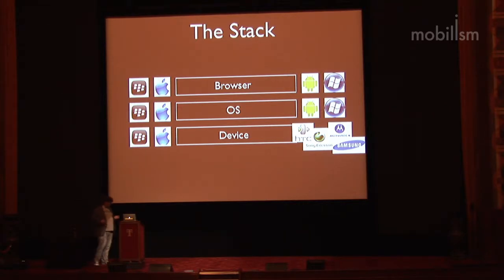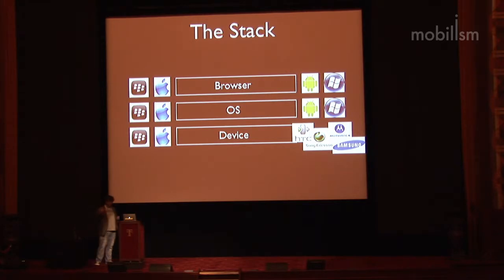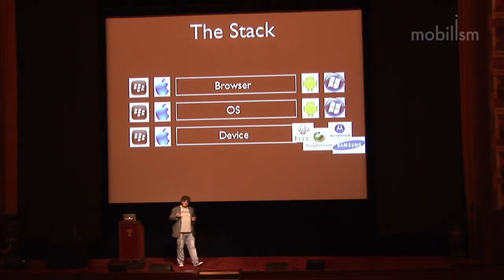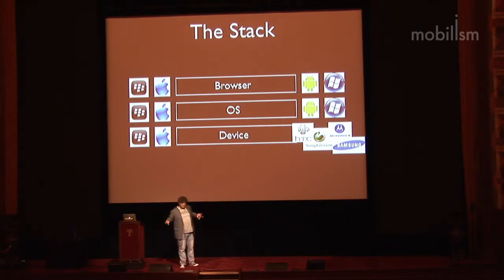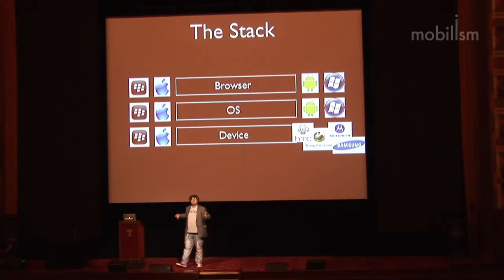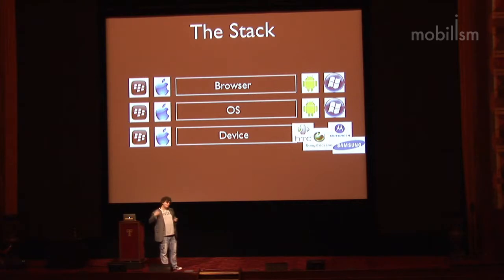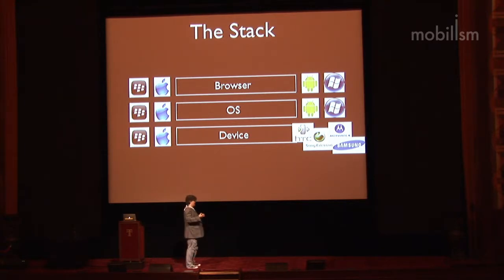You have to realize there's an inherent tension between the operating system vendor on the one hand and the device vendor on the other. What a device vendor wants most of all, especially if he has to buy an operating system from somebody else, is to be able to distinguish himself from his competitors. Both Samsung and HTC create Android phones, but they don't want their Android phones to be exactly the same, because if they were, the consumer wouldn't care whether he bought a Samsung or an HTC.